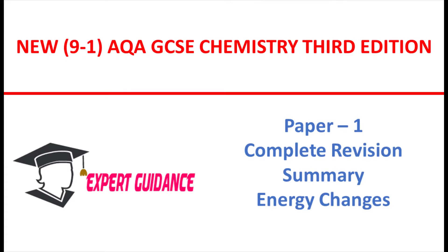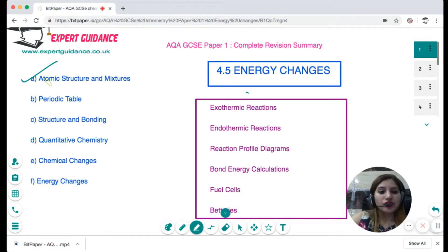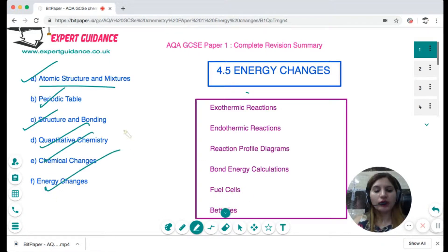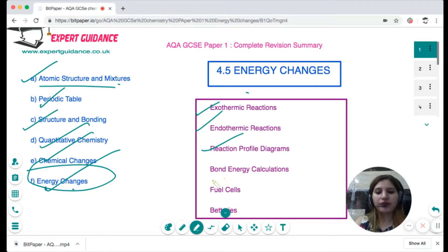Hello friends, welcome to Expert Guidance. Today in this video we'll be covering Topic 4.5 of your AQA GCSE Chemistry Paper 1: Energy Changes. For Paper 1 we need to cover atomic structure, periodic table, structure and bonding, quantitative chemistry, chemical changes, and energy changes. Today we're covering the last topic — energy changes — which includes exothermic reactions, endothermic reactions, reaction profile diagrams, bond energy calculations, fuel cells, and batteries.